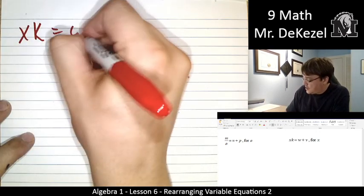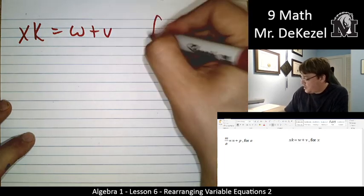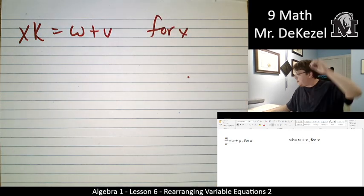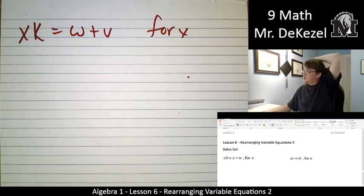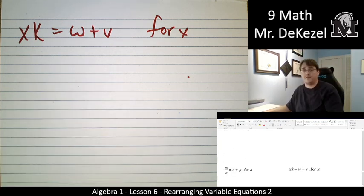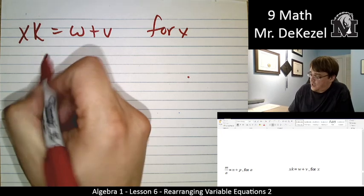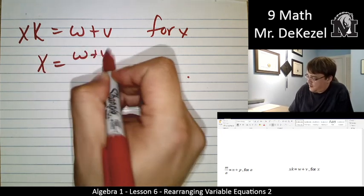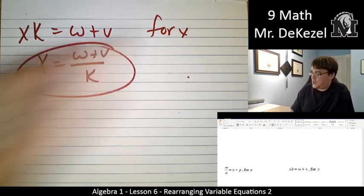Let's do one more. xk is equal to w plus v. We're going to solve for x. Is this the same problem as what's up top? Well, it is the exact same problem as what's up top except w and v are switched around. I'm just going to go ahead. OK, we did it. Yay.